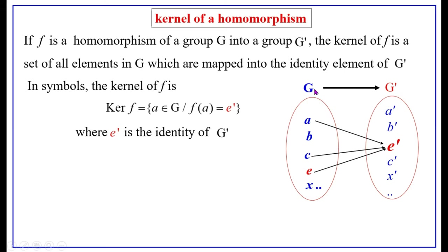the identity element of the domain group must always be mapped onto the identity element of the co-domain group. Therefore F(E) must equal E'. Now, what is the kernel of this function? The kernel of F from G to G' is the set of all elements of G which are mapped into E'. G has many elements A, B, C, E, X, Y, Z, and so on, but the elements mapped into E' are A, C, and E. These three elements are known as the kernel of F.